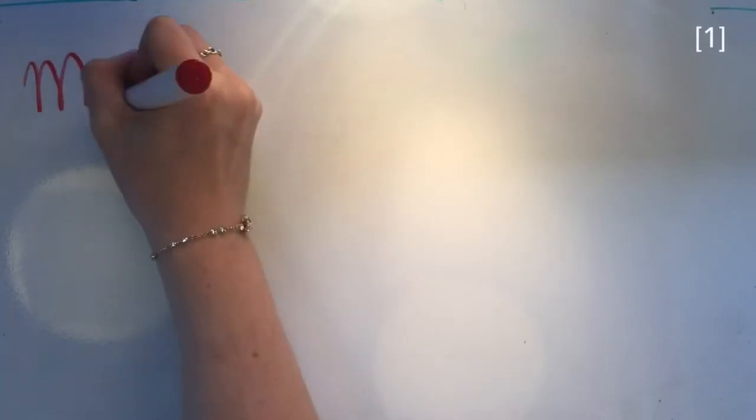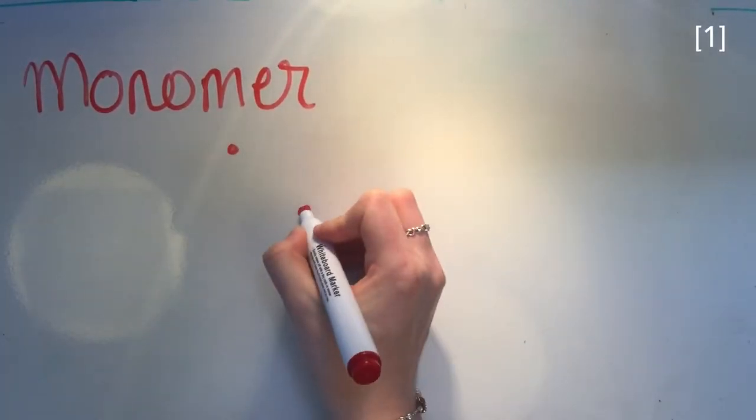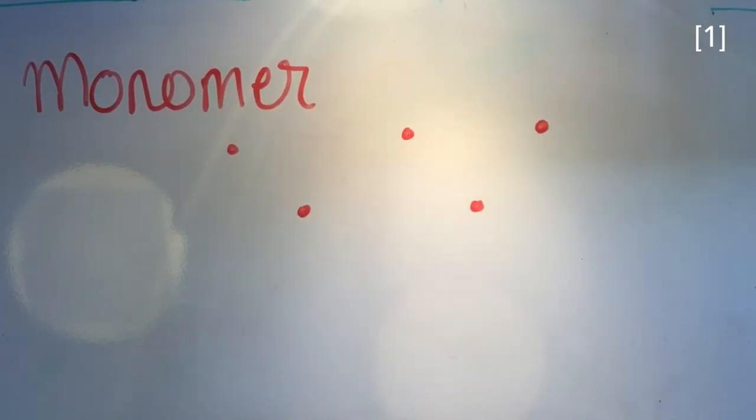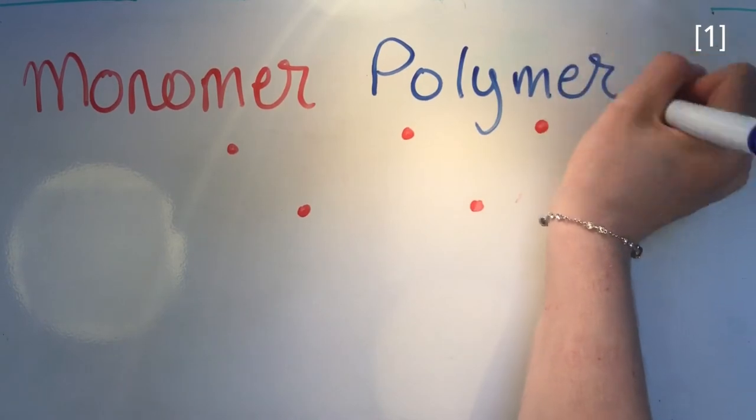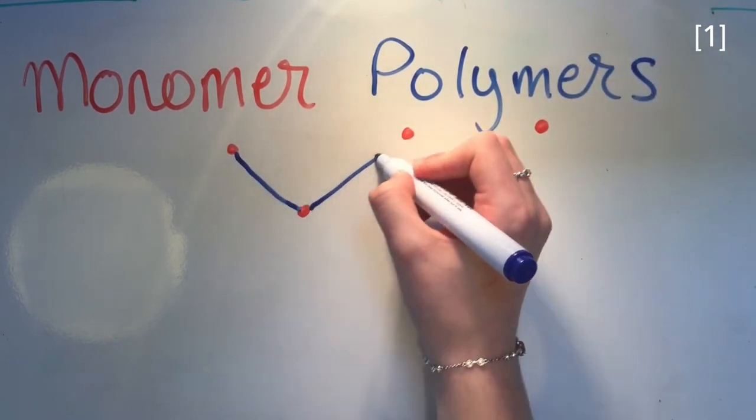A polymer is several monomers joined together to create a long chain. There are two classes of polymers.